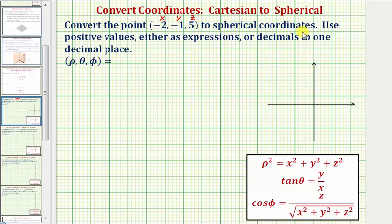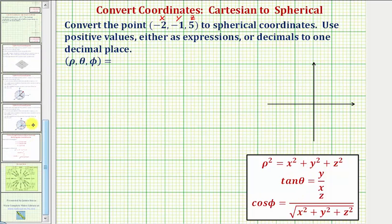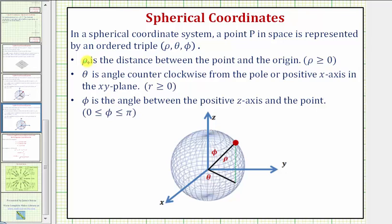To find the spherical coordinates, we need to find rho, theta, phi using our formulas. For a quick review: rho is the distance between the point and the origin — this distance here. Theta is the angle counterclockwise from the positive x-axis in the xy plane — this angle here.